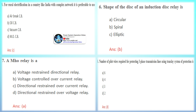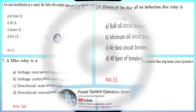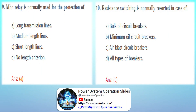An electrical power system comprises several expensive and sensitive equipment like transformers, alternators, measuring instruments, and more. Faults occurring in the system can damage these equipment and cause a loss of property or life due to electrical accidents. Therefore, an electrical protection system has to be implemented to protect the power system from faults or abnormal conditions.